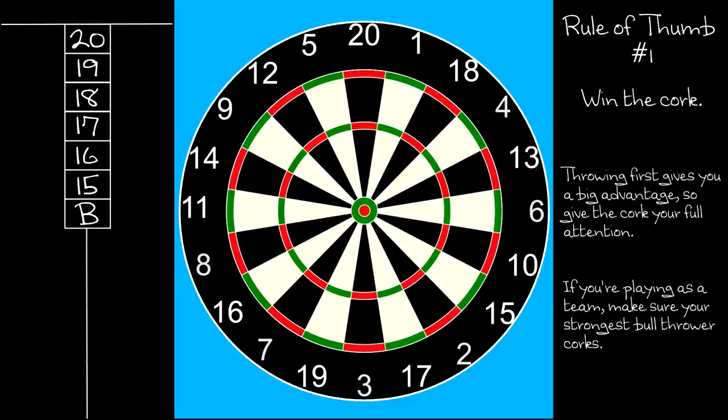My first rule of thumb is so obvious it hardly bears mentioning, but I will. It's simply this: win the cork. It's a distinct advantage to throw first. So if you determine the order of play by corking—that is to say, throwing nearest the bull to start—give it your full concentration and try to hit the bull. If you're playing in a team, always let your strongest bull thrower cork.